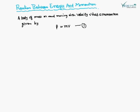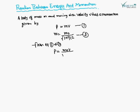Now we discuss the relation between energy and momentum. A body of mass m moving with velocity v has momentum given by p = mv. We also know that m = m₀ / √(1 - v²/c²). This is equation number two. From equations one and two, putting the value of m into equation one, p = m₀v / √(1 - v²/c²).